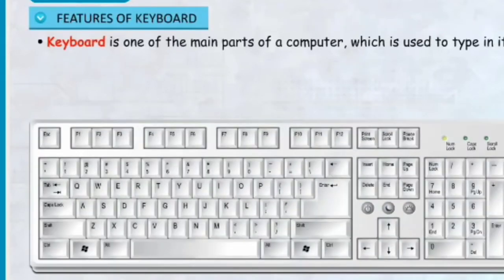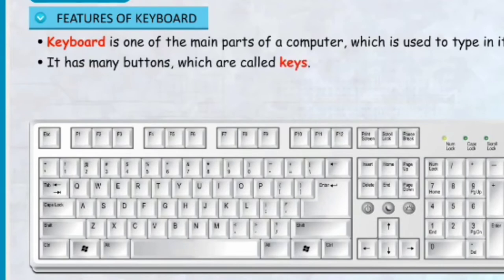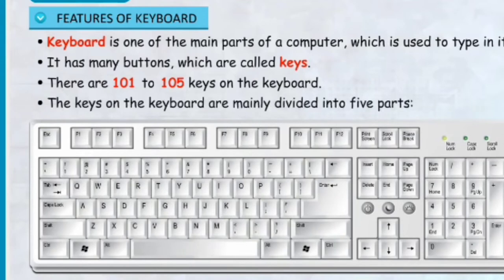Keyboard is one of the main parts of a computer, which is used to type in it. It has many buttons which are called keys. There are 101 to 105 keys on the keyboard. The keys are mainly divided into five parts.